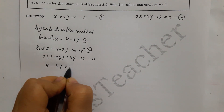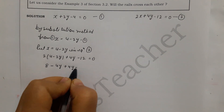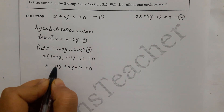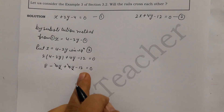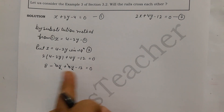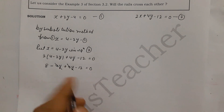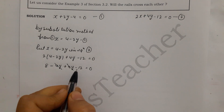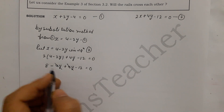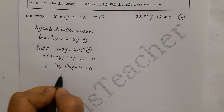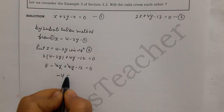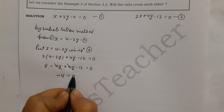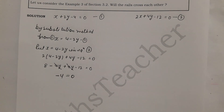So −4y and +4y cancel each other. Our variable cancels here, just like in Example 9. We are left with 8 − 12 = −4, so the result is −4 = 0. Now you will see that when you relate both equations, the variables have eliminated.